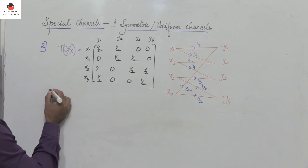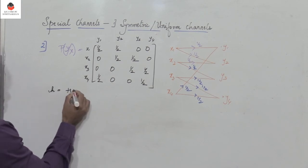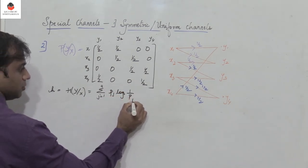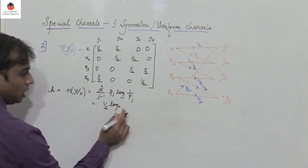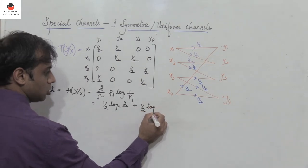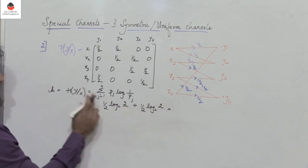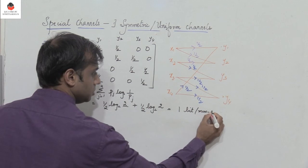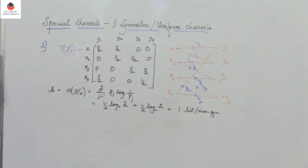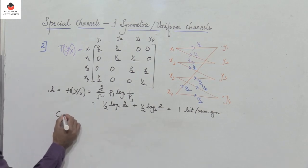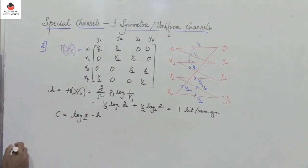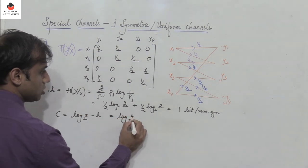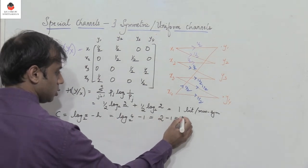To find the channel capacity, first calculate h of y given x, which is a constant: summation from j equal to 1 to 4 of p(j) log base 2 of (1/p(j)). This gives (1/2) log base 2 of 2 plus (1/2) log base 2 of 2, which equals 1/2 plus 1/2, so h equals 1 bit per message symbol. Then channel capacity c equals log s to base 2 minus h, where s equals 4 output symbols: log 4 to base 2 minus 1, which is 2 minus 1, so c equals 1 bit per message symbol.